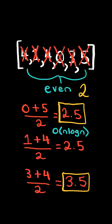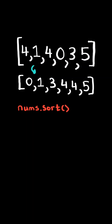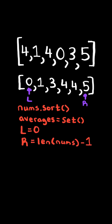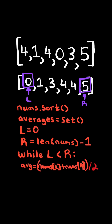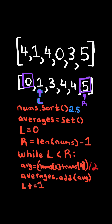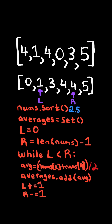We will solve this in O(n log n) time. First, we sort the list and create a set for the averages. We then have a left and right pointer. While left is less than right, we get the minimum from the left and the maximum from the right, calculate the average, and add it to our set. We then increment left and decrement right and continue.